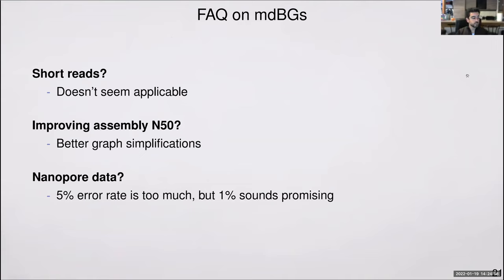Some frequently asked questions on MDBGs: they are not applicable to short reads as far as I can tell because short reads are too short. Improving NG50 for assembly will probably be done by doing better graph simplifications. The ones we used are basic. For nanopore data, 5% error rate is too much for MDBG, but once they achieve 1% error rate then we will definitely be able to use it.